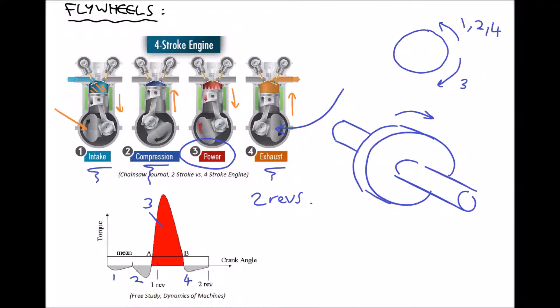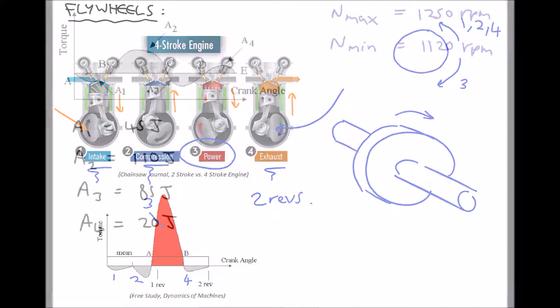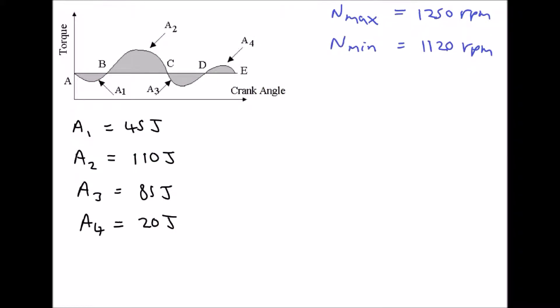On screen we have a torque-crank angle diagram for a specific machine. We notice two stages where energy is being absorbed — between A and B, and between C and D — and two stages where energy is being produced: between B and C (represented by energy A2) and between D and E (represented by A4). This machine is different from our four-stroke engine, which had three stages absorbing energy and just one producing it.